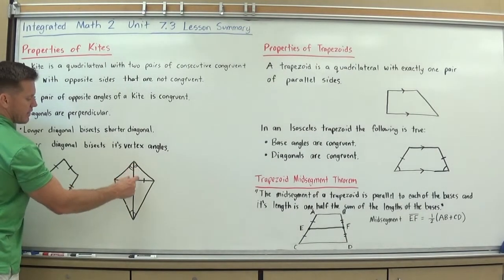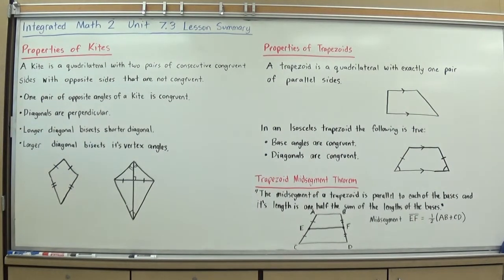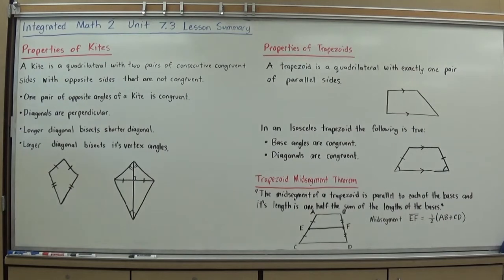So it does bisect here and create two congruent segments. So I always look for that longer diagonal to help me identify the little congruent segments and the opposite congruent angles. Hopefully that helps.